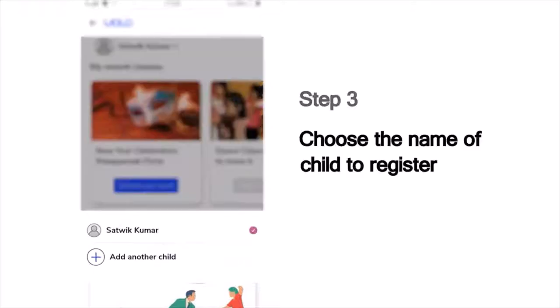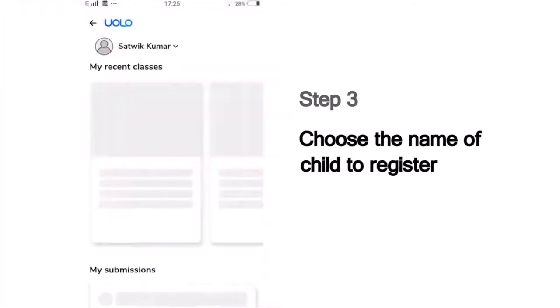Next, it will show you the list of children whose names are registered in this mobile number. Choose your name from this list to submit your work. For instance, if you are Sathvik Kumar, choose that name.